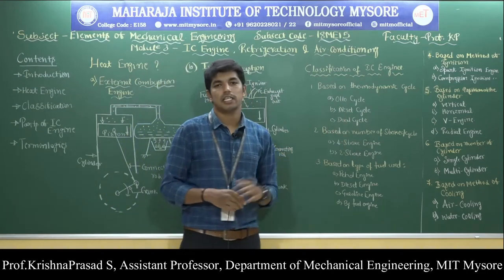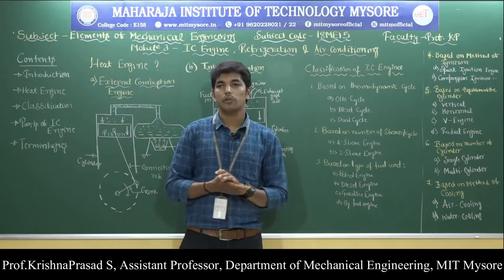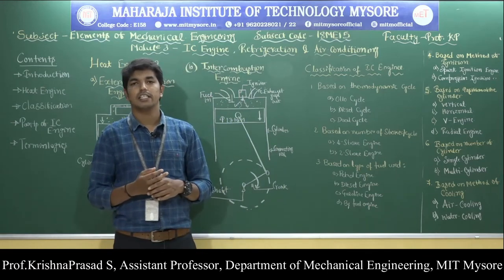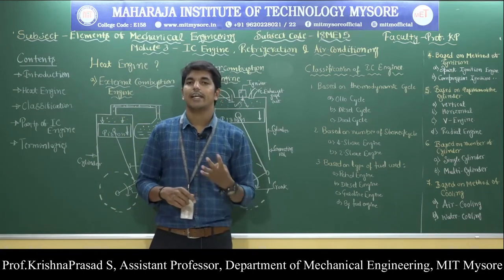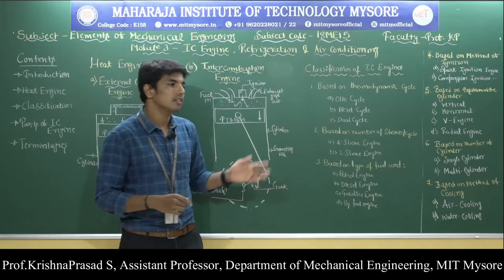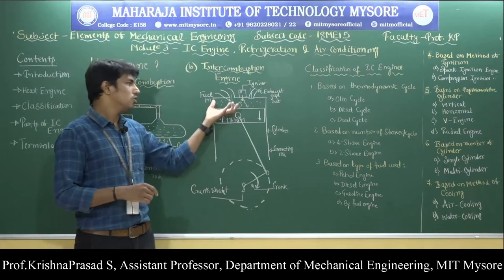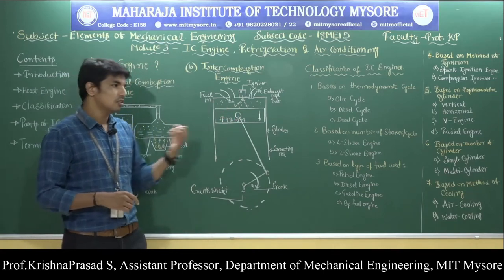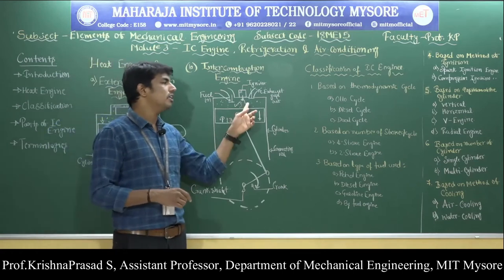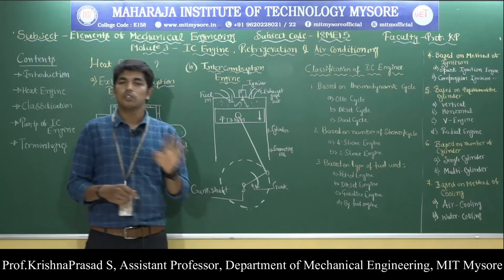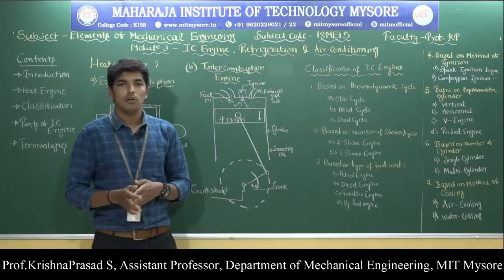The second classification is based on the number of strokes per cycle. There are two types: the four-stroke engine and the two-stroke engine. In a four-stroke engine, the working cycle is completed with four different strokes: suction stroke, compression stroke, power stroke, and exhaust stroke. During the suction stroke, the air-petrol mixture enters into the engine cylinder. During the compression stroke, the air-fuel mixture is compressed to very high pressure and temperature. During the power stroke, the air-fuel mixture burns and high power is developed. During the exhaust stroke, the burnt gases are expelled out through the exhaust valve. Examples of four-stroke engines include bikes, cars, trucks, and tippers.